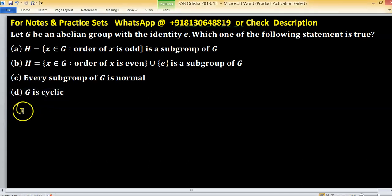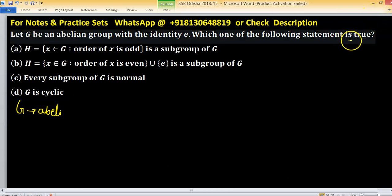In this problem, G is given as an abelian group with the identity. Always if a group, identity is always there. Which one of the following statement is true? We have to seek the true statement.